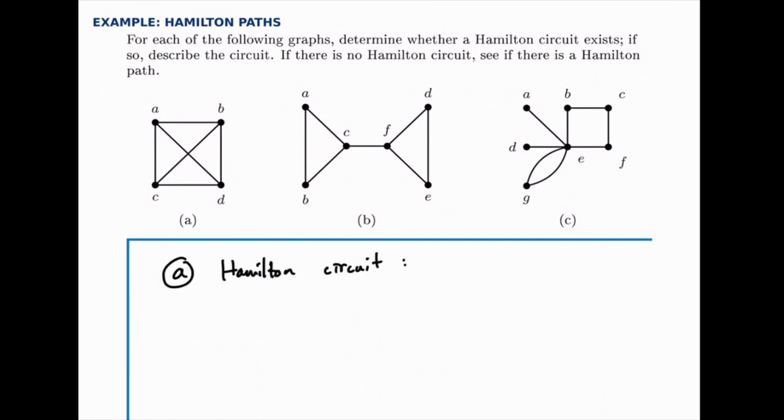So, for example, we could say the circuit A to D to C to B back to A would be an example of a Hamilton circuit on this one.